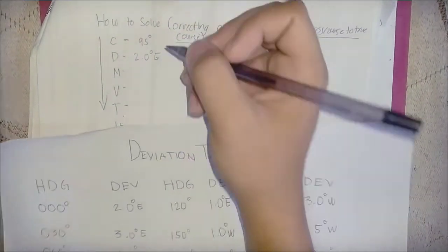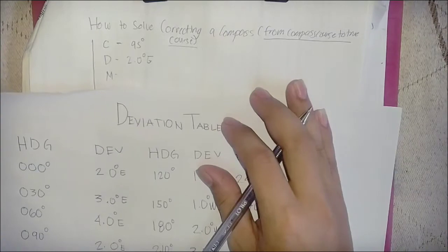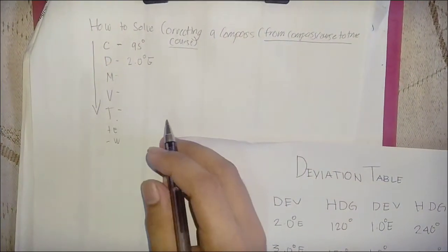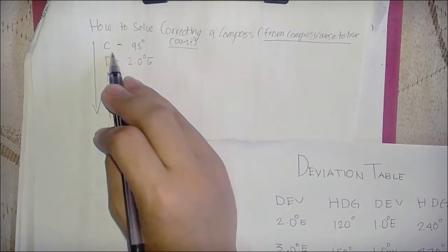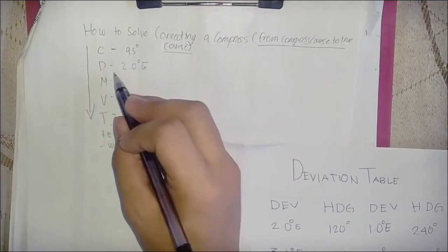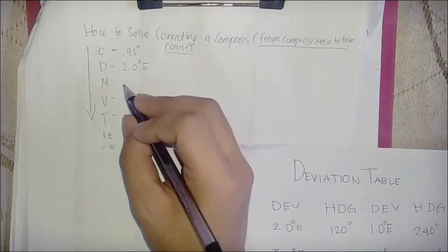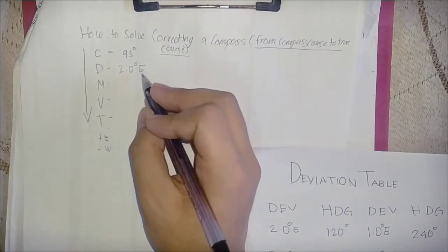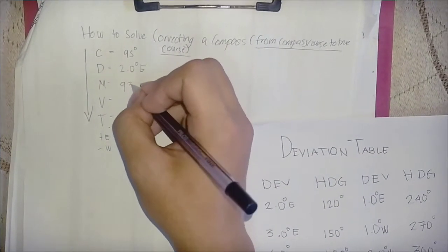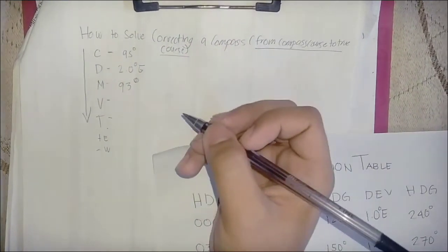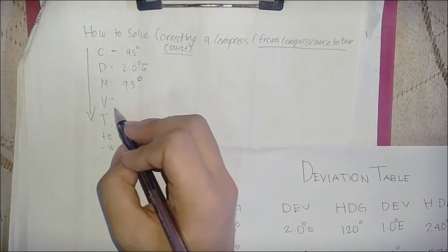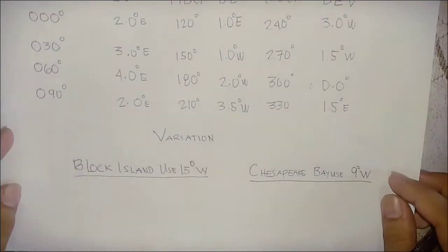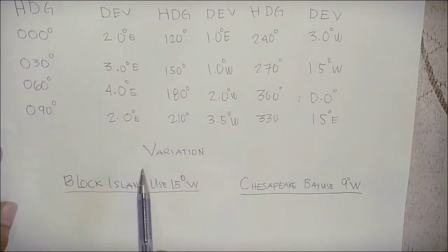To get our magnetic, we simply subtract our deviation from the compass value. So 95 degrees minus 2.0 degrees deviation gives us a magnetic of 93 degrees. Now to get our variation, let's go back to the deviation table.